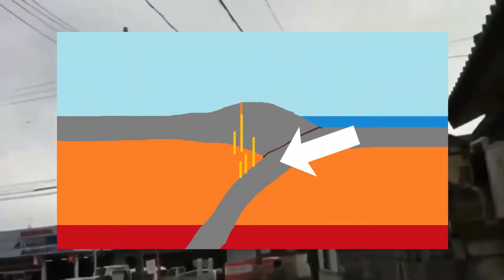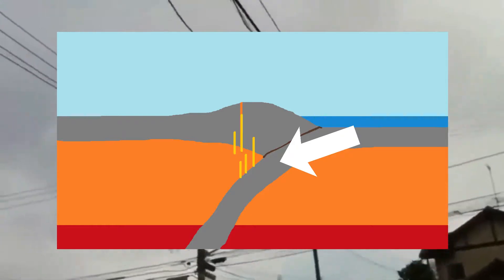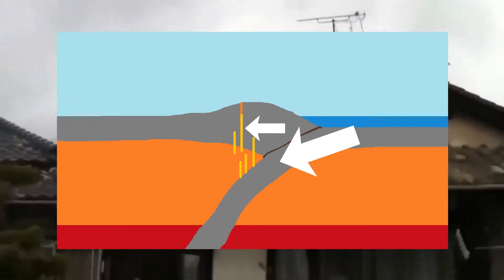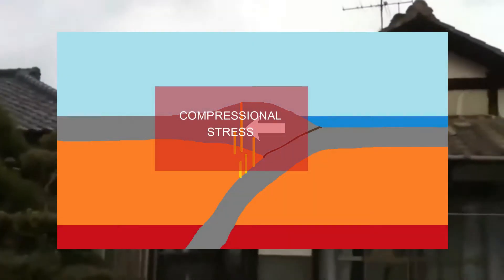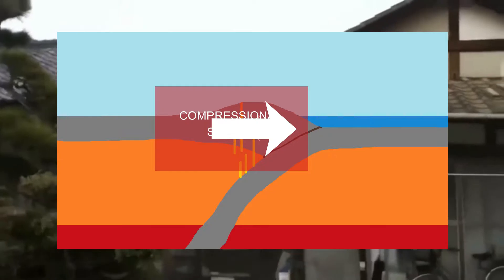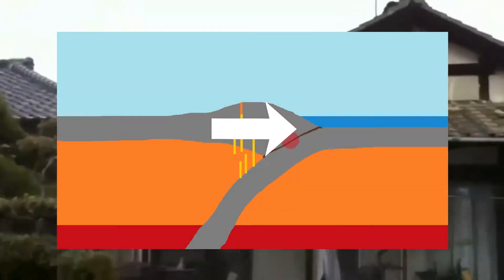When one plate is subducting under another, it pushes the overriding plate back. Two things can happen here. First, the whole thing bounces back, resulting in quite a big earthquake and usually a tsunami.